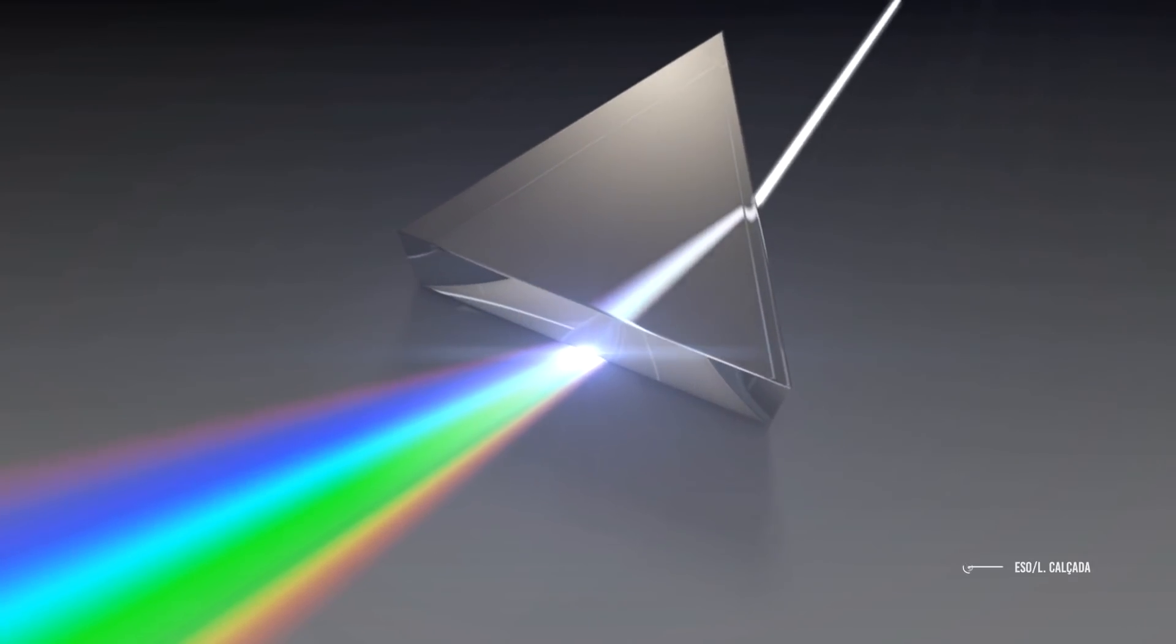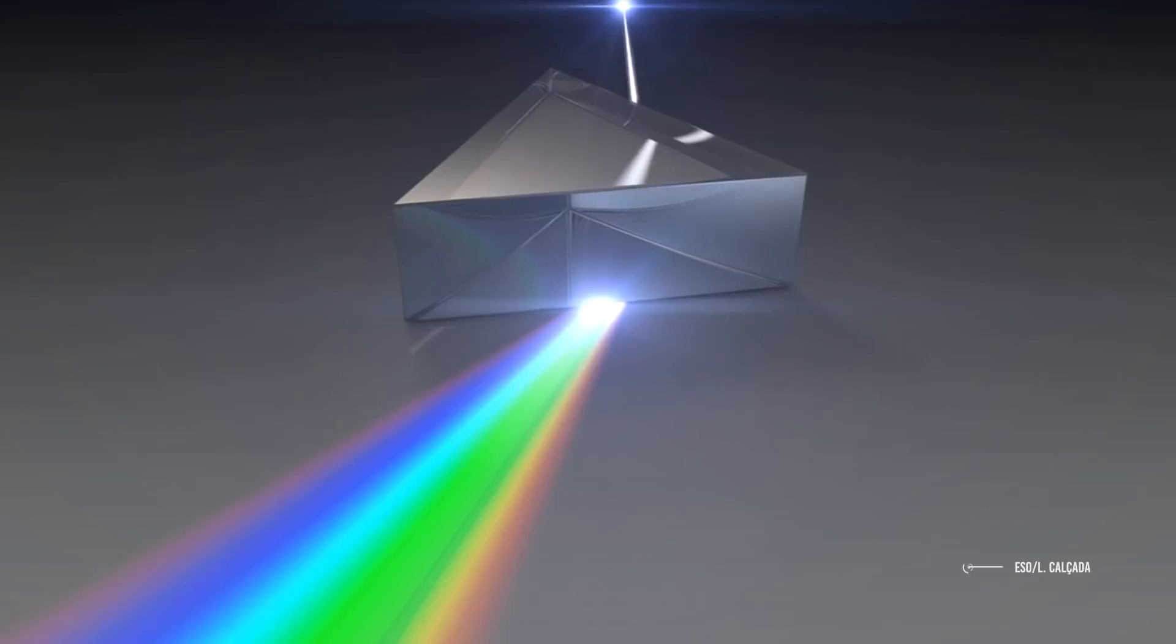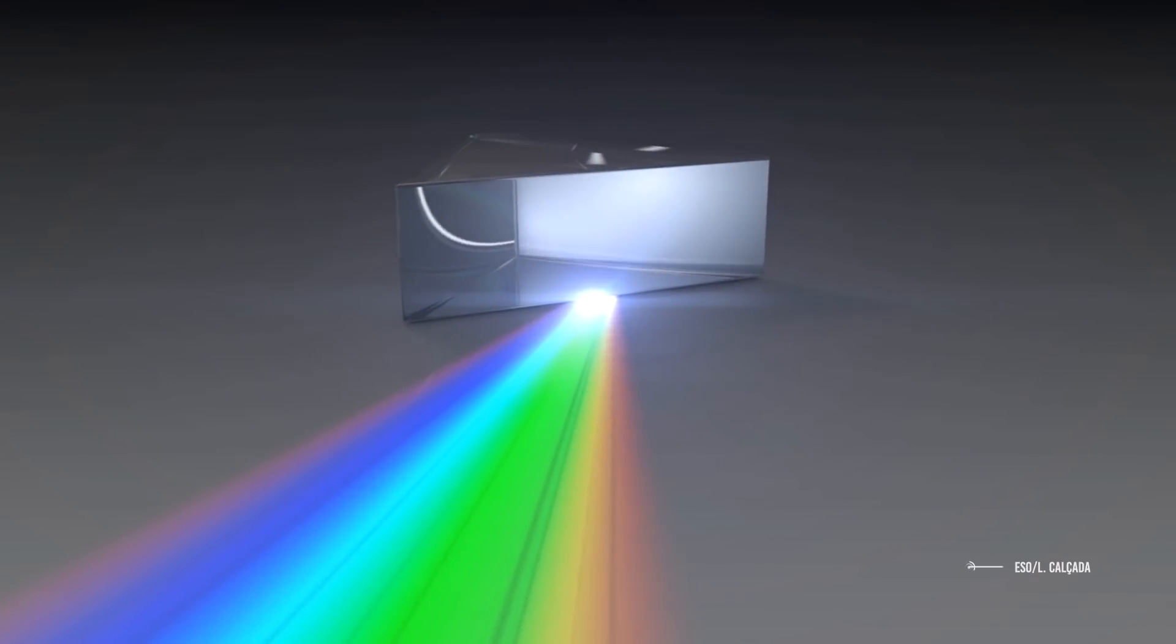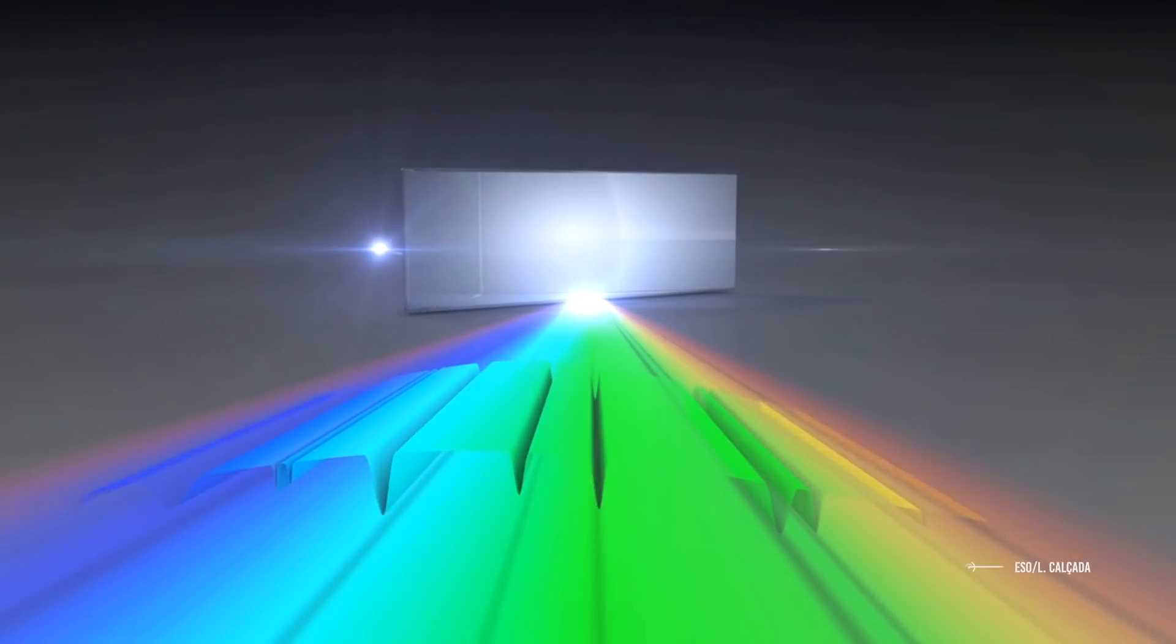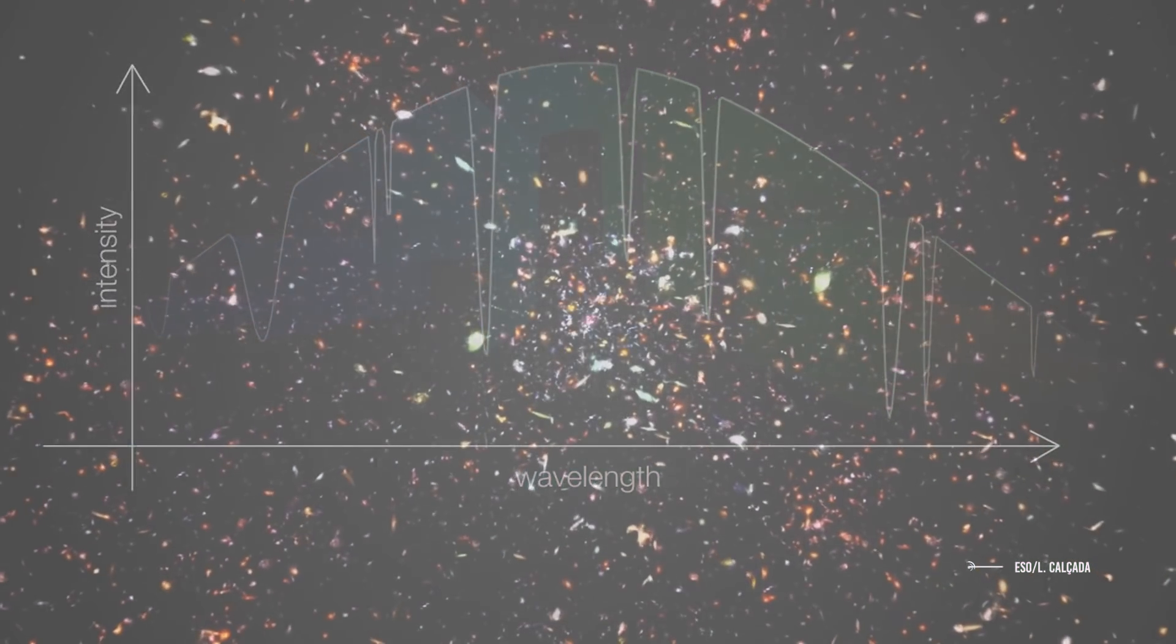So a Doppler shift towards the red part of the spectrum means the object is getting away from us. On the opposite side, a blue shift in the lines of a stellar object means it is approaching us. It is now that we are finally ready to talk about galaxy collisions.